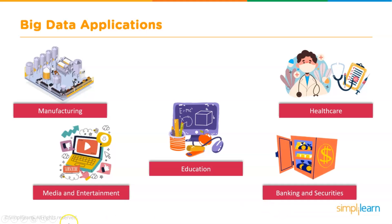Companies offering media and entertainment services such as Netflix, Amazon Prime, and Spotify analyze user data they acquire. Information is gathered and evaluated about the types of videos and music consumers are watching and listening to, and how long they spend on a website. In banking and securities, Big Data is used by the Securities Exchange Commission to track activity in the financial markets. It is also used by retail traders, big banks, and hedge funds for risk analytics, including enterprise risk management and anti-money laundering.